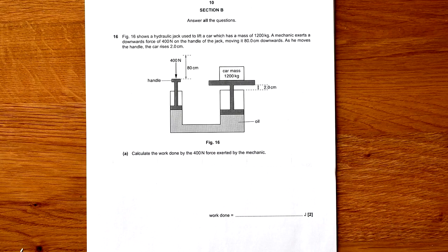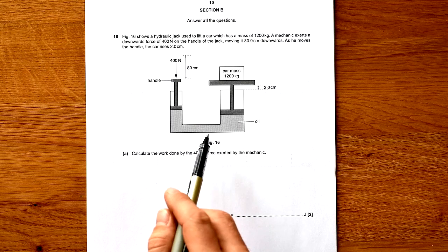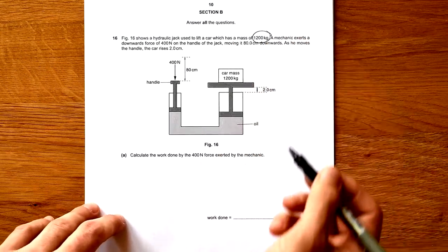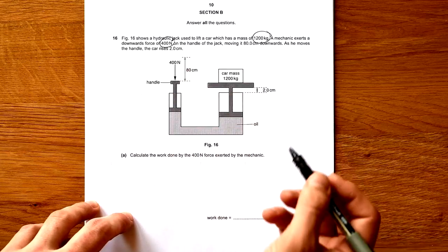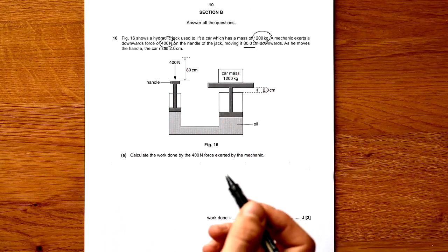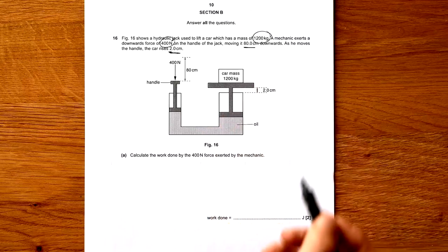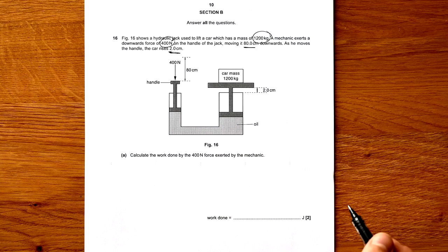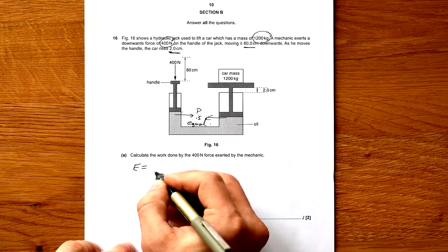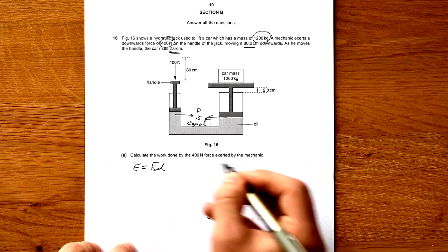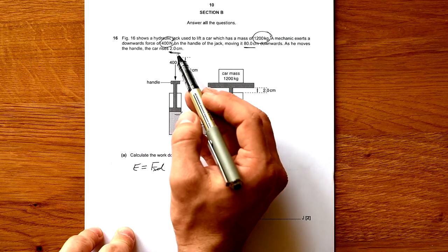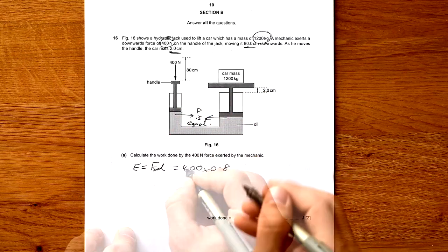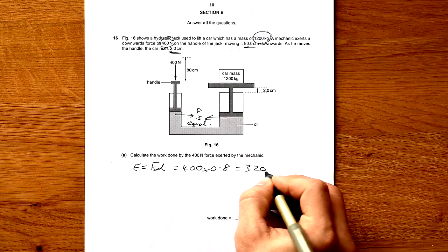Section B, Question 16: Figure 16 shows a hydraulic jack used to lift a car which has a mass of that. Mechanic exerts a downwards force of that. Handle moves 80 centimeters downwards. As he moves the handle the car rises two centimeters. Calculate the work done by the 400 newton force. For work done we're looking for force times distance. 400 times 0.8, that gives us 320 joules.